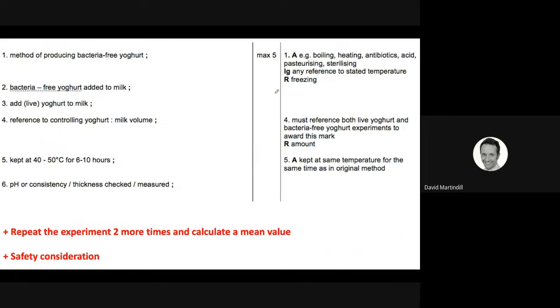Here is the mark scheme. You can see that the examiners want a method for producing bacteria-free yogurt. You could kill the bacteria by boiling the yogurt, perhaps. You would add the bacteria-free yogurt to the milk. Here is the method. And the yogurt, which is live, to the milk. Some reference to controlling the volume. So we have an example here of a factor that must be controlled or kept constant. And some reference to keeping the temperature constant and the time constant. Here is a reference to the dependent variable and how it would be measured. With this question, it's very important that you follow those tips I showed you a minute ago. Independent variable, dependent variable, controlled variables, repeat, and then safety. On some other mark schemes, you will see further marks for various points that I've mentioned.